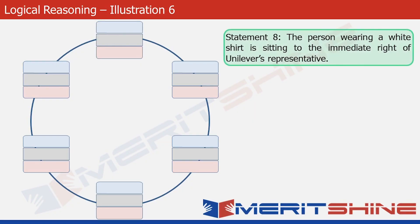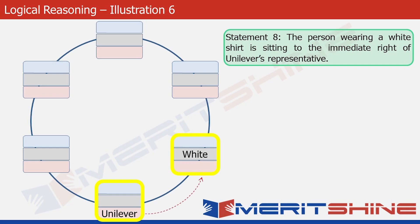Let's first look at statement eight, which says that the person wearing a white shirt is sitting to the immediate right of Unilever's representative. We don't have any data filled in the structure as yet, so we can start from anywhere. Let's place Unilever in the bottom-most vacant cell. The person in the white shirt is sitting one position to the right of this person, so we write white into that cell and move forward.